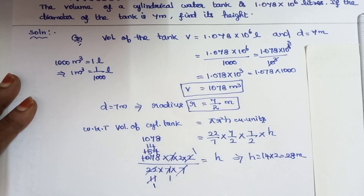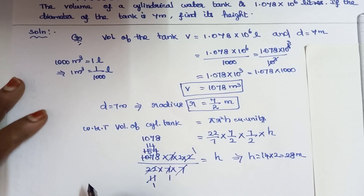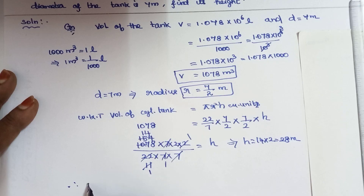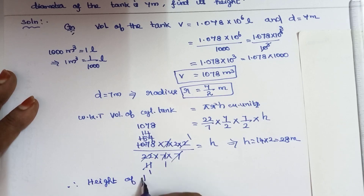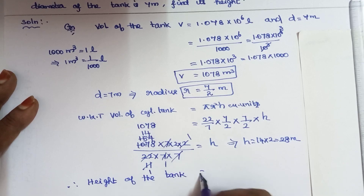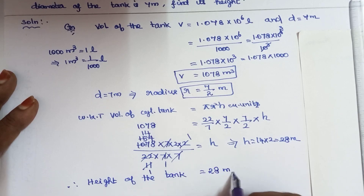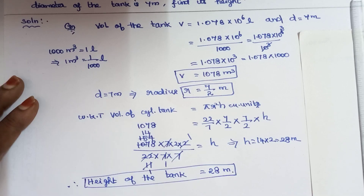Therefore, the height of the cylindrical tank is 28 meters. Height of the tank equals 28 meters. Okay, thank you.